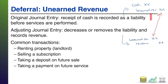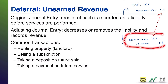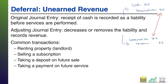Notice what happens here: you get cash, and ultimately you're earning money for that cash. But in between the two, there's a delayed period where you still owe someone the service. So the initial journal entry is cash and record a liability; the adjusting entry that comes later removes the liability and records the actual revenue.